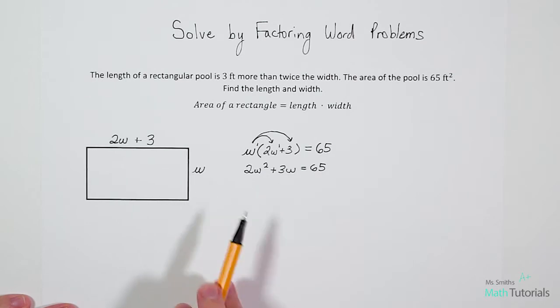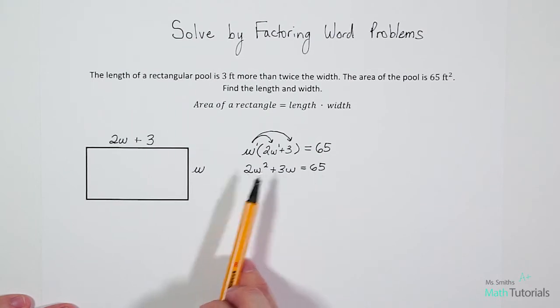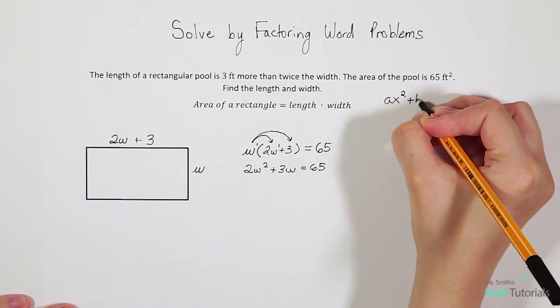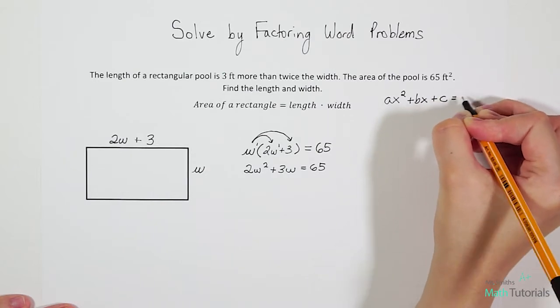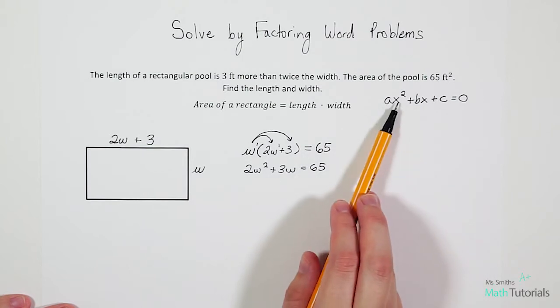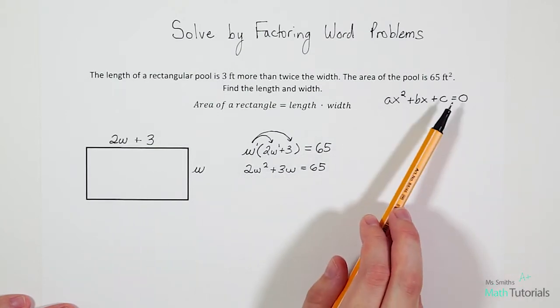Let's multiply our second part. So W times positive 3. That would be a positive 3W. And then we've got our equals 65. So now at this point, notice that we have a quadratic. And what I mean by quadratic is our highest exponent in this problem is a 2. And the highest exponent of 2 is a quadratic. So how do we solve quadratics? We do something called factoring. Now before we factor, it's very important that we have our quadratic in something called standard form.